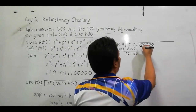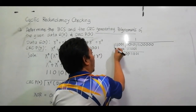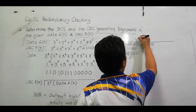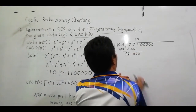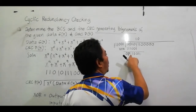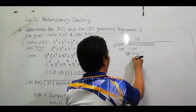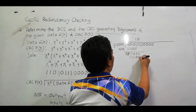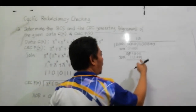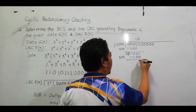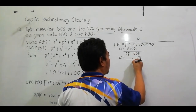Cancel out that 0 and bring down 1. The most significant bit is now 1, so the quotient digit is 1. Multiply: 1 times divisor gives 1 1 1 0 0 1. XOR again: 1,1=0; 1,0=1; 0,0=0; 1,0=1; 1,1=0; 1,1=0. Cancel out and bring down 0. Most significant bit is 0, and divisor's MSB is 1, so quotient is 0. Bring down 0.